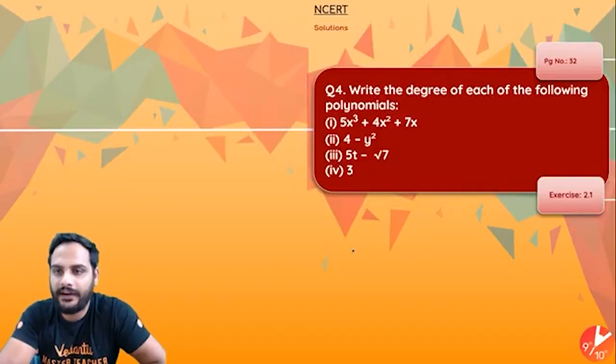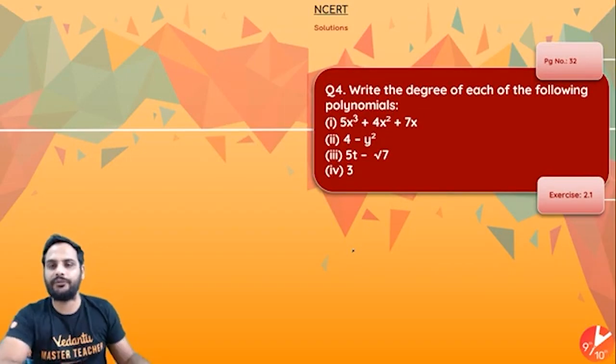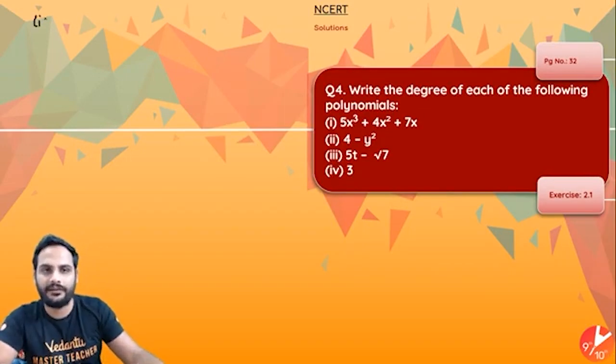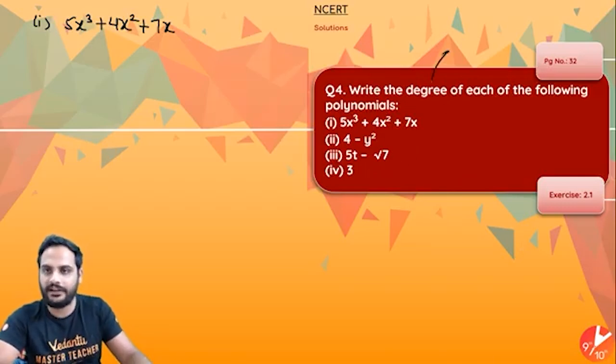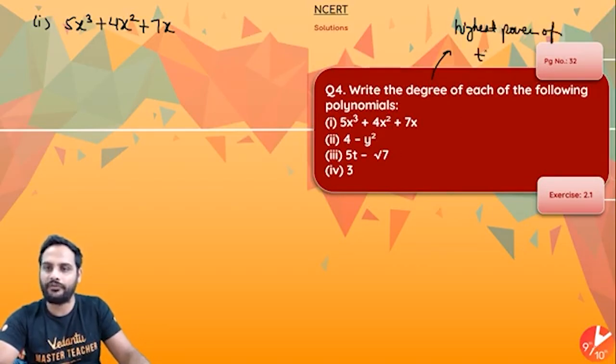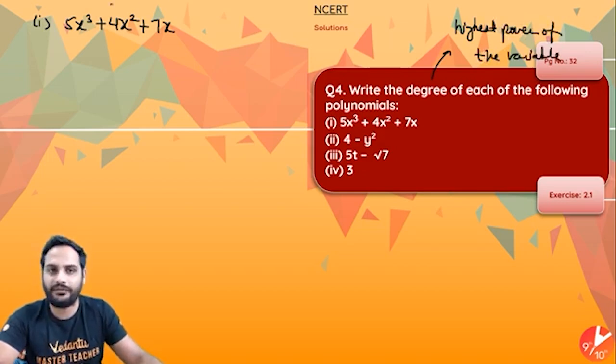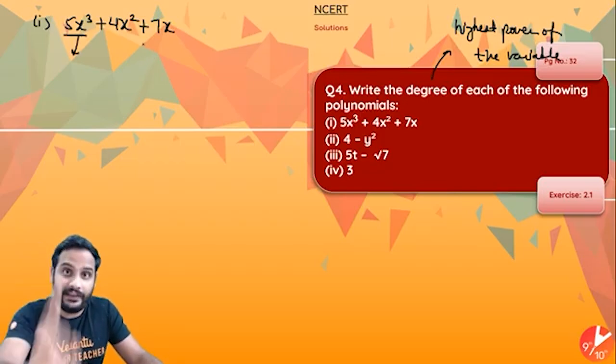Let's go for the next question. Question 4: Write the degree of each of the following polynomials. So you see here, the first polynomial I have is 5x³ + 4x² + 7x. Degree means highest power of the variable.